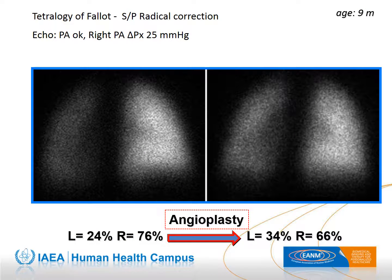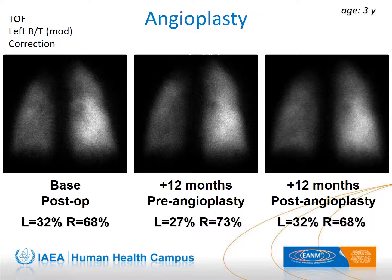Lung perfusion scintigraphy can be used with excellent results to monitor progress of the symmetry of pulmonary blood flow after angioplasty. It is imperative to interpret the scan in conjunction with echocardiography because lung perfusion scintigraphy cannot evaluate stenosis of the main pulmonary artery or a balanced stenosis of the right and left branches. The interval between the interventional procedure and the scan should be at least 6 months to avoid false results related to vasospasm or early restenosis.